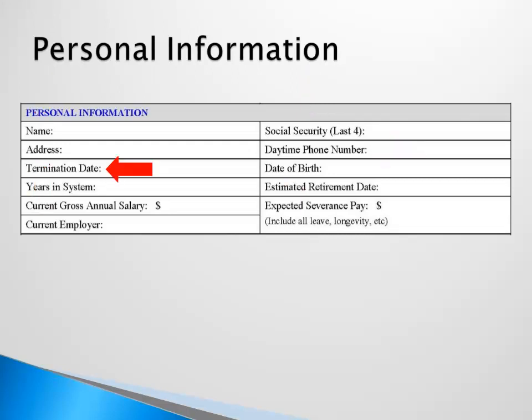For active members, the termination date is the last day you'll work for your current employer. Or, for members who are not currently working, it is when you left NHRS-covered employment. This date must be prior to the estimated date of retirement. The estimated date of retirement is always the first of the month. When entering your retirement date, make sure to include the year.